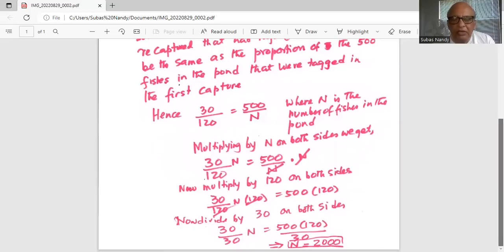Now divide by 30 on both sides. We get 30 divided by 30 times N equal to 500 times 120 divided by 30. 30 in the numerator and in the denominator cancel out on the left hand side, leaving us with N equal to 500 times 120 divided by 30, which is 2000.